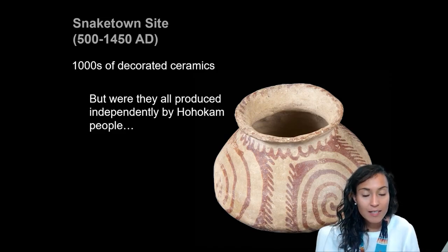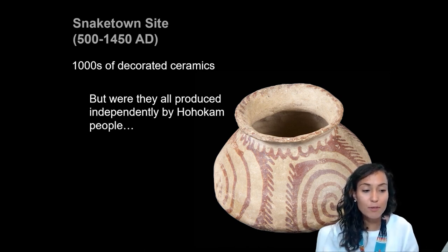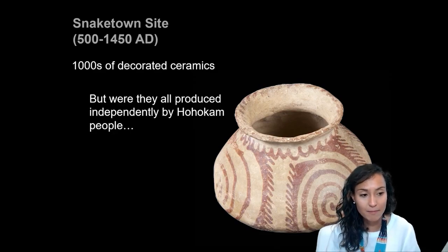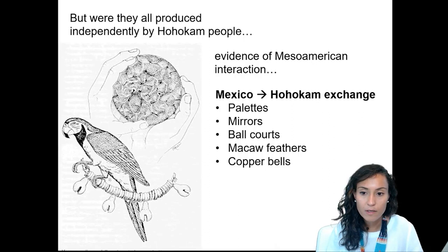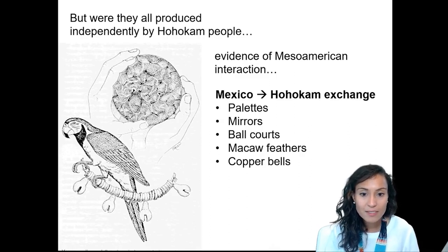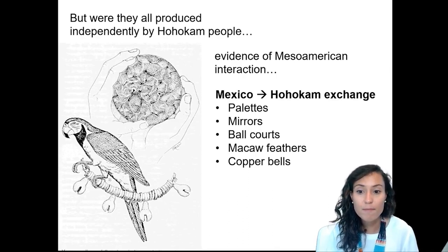More than a thousand elaborately decorated pots, stone bowls, and bone artifacts were found at Snaketown and similar places within the Hohokam region. These ceramics were constructed from brown clay and often decorated with red geometric designs, like the one behind me. Artifacts from Hohokam sites suggest that Hohokam people were regularly trading and interacting with people outside of the Southwest. For example, pots used to burn incense, pallets, mirrors, ball courts, macaw feathers, and copper bells were all likely acquired through interaction with Mesoamerica, or at least West Mexican indigenous societies.